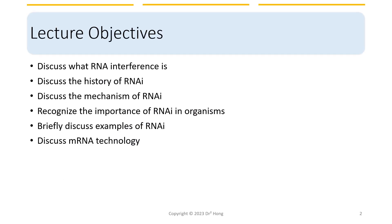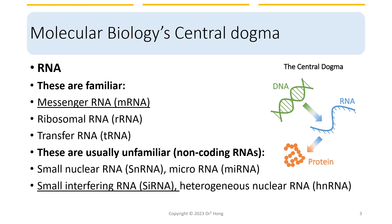In addition to messenger RNA, we are going to spend some time discussing what RNA interference is, its history, and how it plays a role in organisms. To begin, we are back to molecular biology's central dogma again, but with a focus on RNA. Most people who have studied biology at an undergraduate level are familiar with the three types of RNA: messenger RNA (mRNA), ribosomal RNA (rRNA), and transfer RNA (tRNA). However, there are many more different types of RNAs in cells that are not responsible for coding proteins — such as small nuclear RNA, microRNA, and heterogeneous nuclear RNA. In this lecture, we will focus on small interfering RNA or siRNA and mRNA technologies.